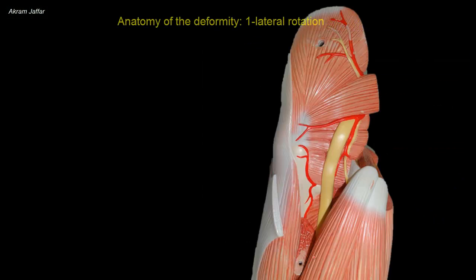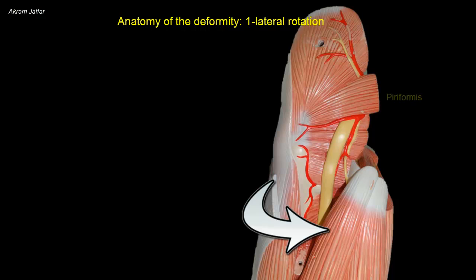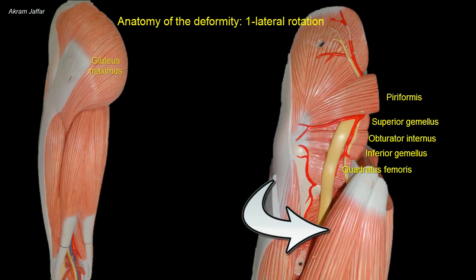Returning to the anatomy of the deformity that results from fracture of the neck of the femur, there is a lateral rotation. This lateral rotation is produced by the short muscles in the gluteal region. These include piriformis, obturator internus and externus, the gemellus superior and inferior, and quadratus femoris muscle, aided by gluteus maximus muscle, which also contributes to the lateral rotation.